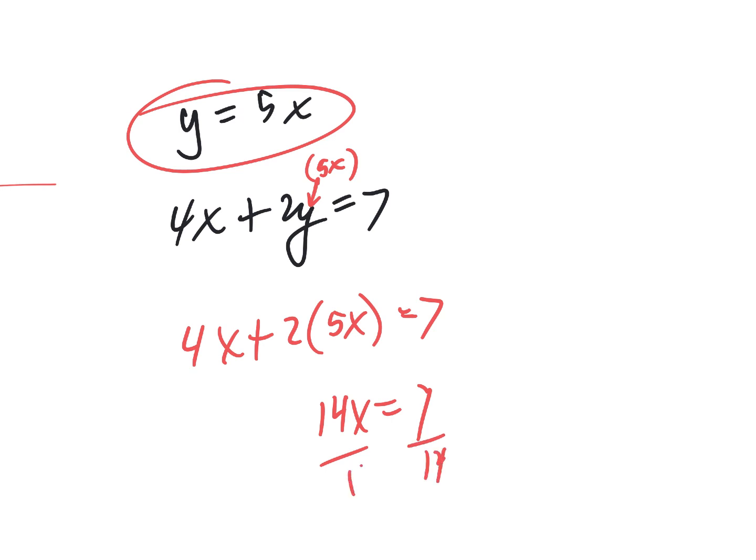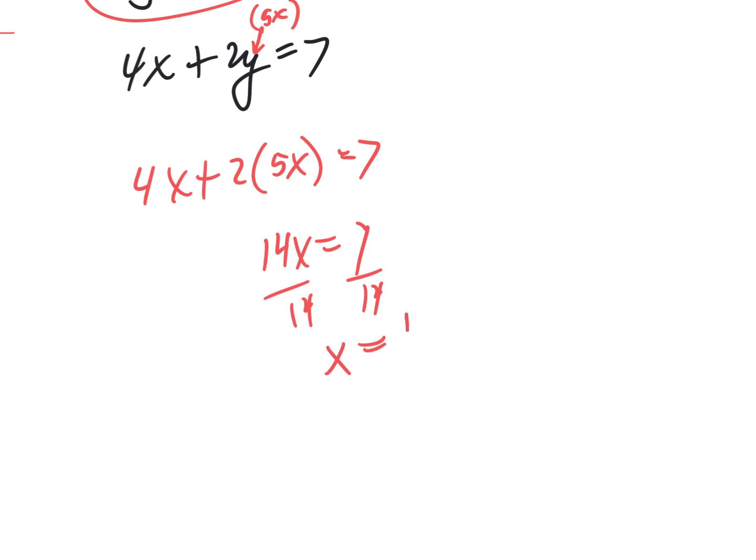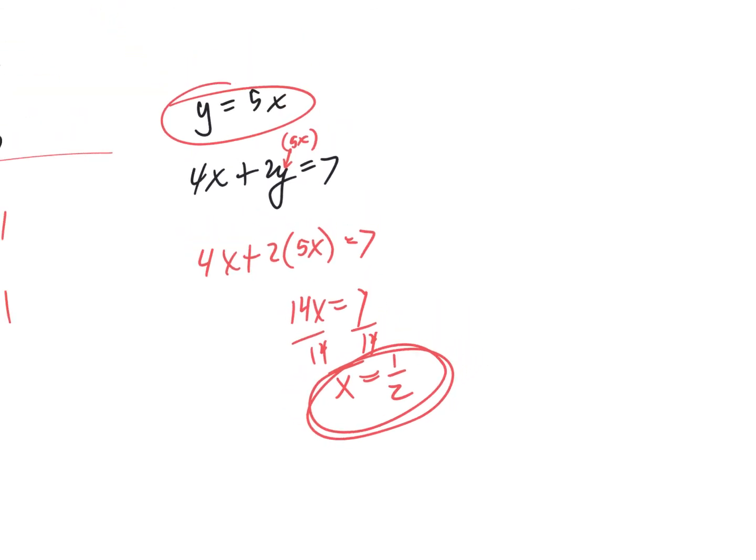14x equals 7 14ths. If you tried to do it in your head, you probably thought it was 2. But it's 1 half. Who had 1 half before I even said 1 half? Nice job. Then, where do I put the 1 half? In either equation I want. I like this one. It's easier. If I put x's 1 half in there, it's 5 times 1 half. So, you'd have to know what 1 half of 5 is. What is it? 2 and 1 half. 2.5. That's what 1 half of 5 is. So, then, y must equal 2.5.